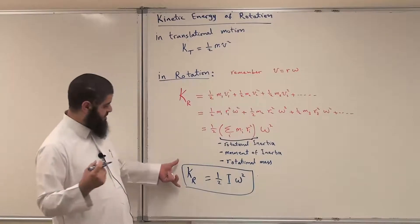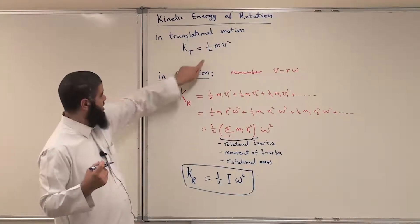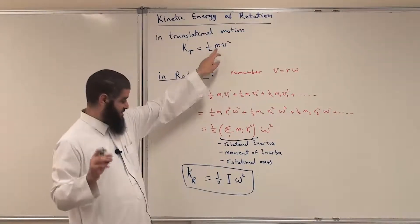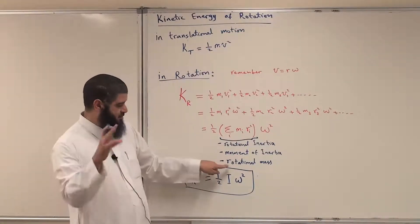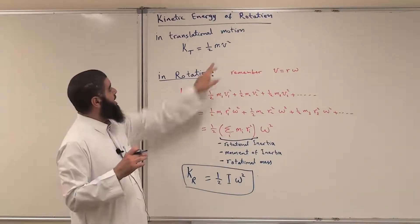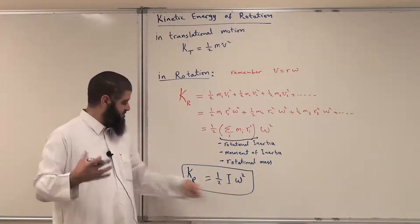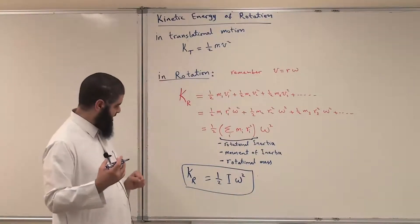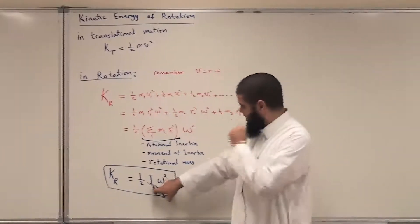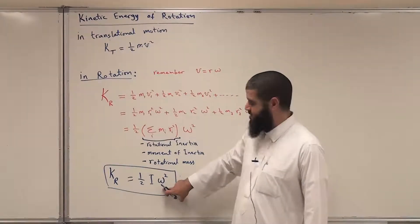It's a very nice result. K_r is very similar to K_t. Both have one-half. The mass m is replaced by I — which is why we call it rotational mass, because it replaces the mass. And v squared in the case of translation is replaced by omega squared. So it is very similar to K in translation, but we replace mass with rotational inertia and linear velocity v with angular velocity omega.